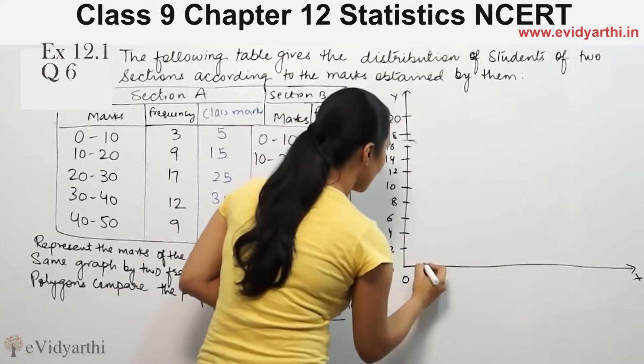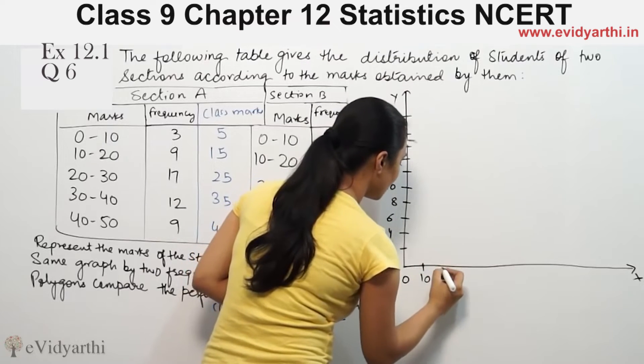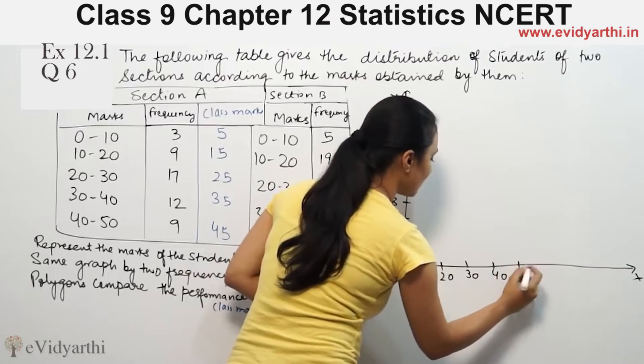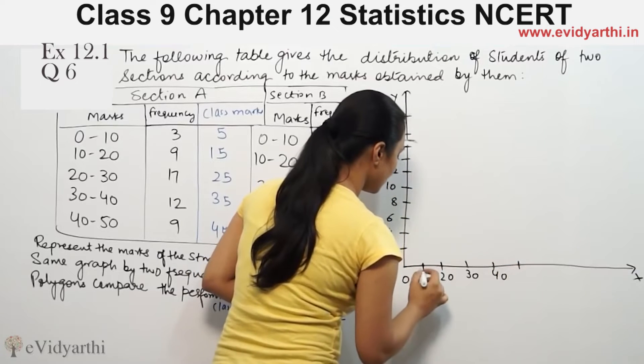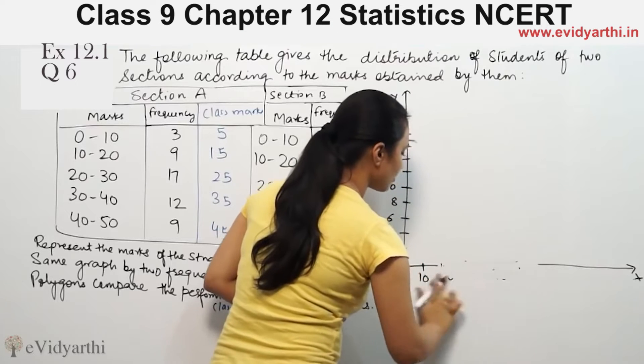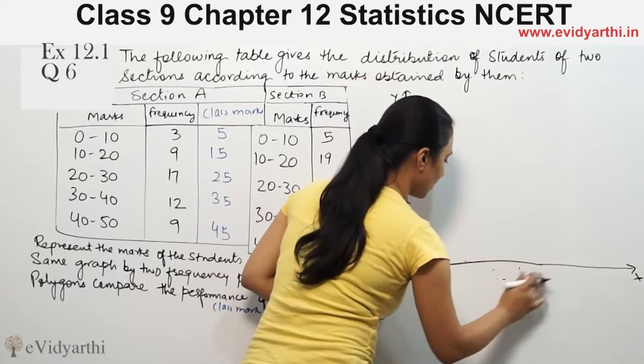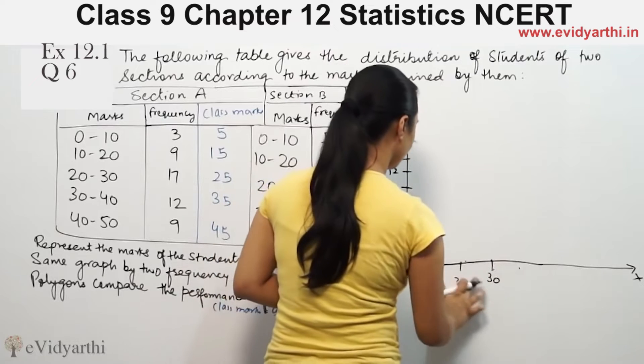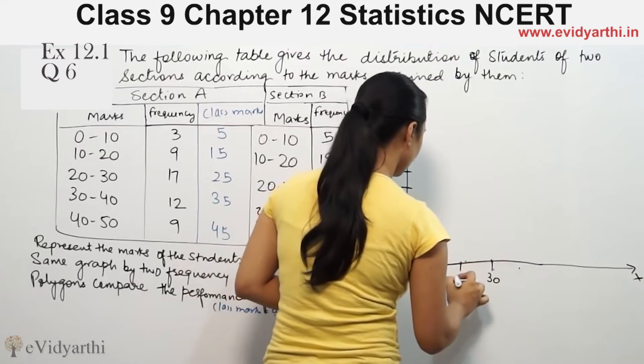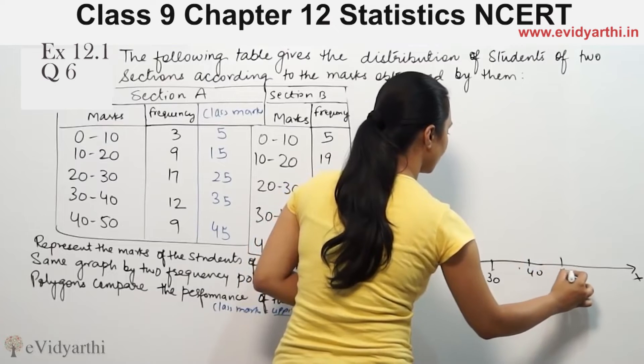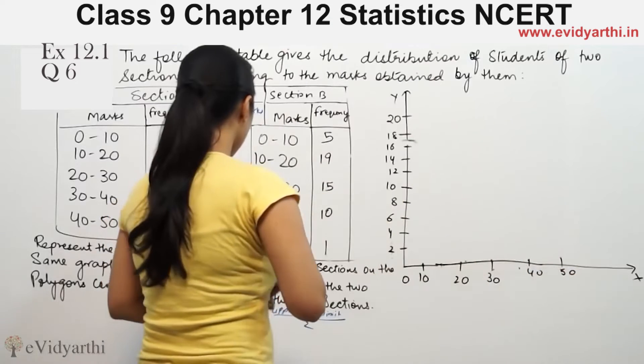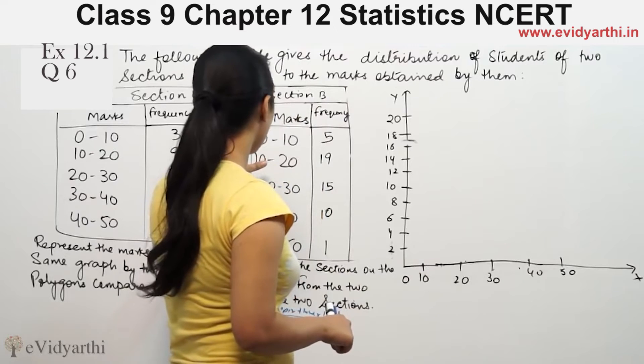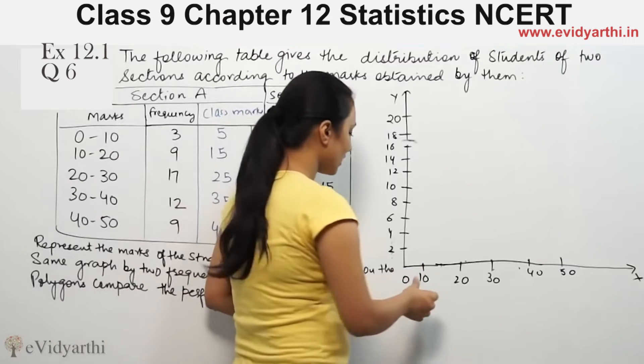Now these are the x-axis values. We have 10, 20, 30, 40. This is 10, this is 20, 30, 40, and 50. These will be the class marks values. For 0 to 10, the class mark is 5. We need to plot the class marks values.